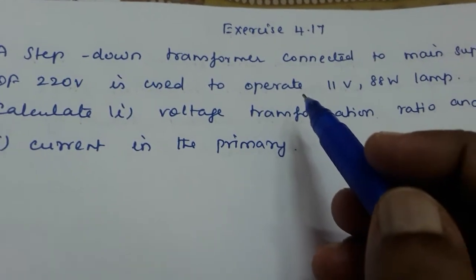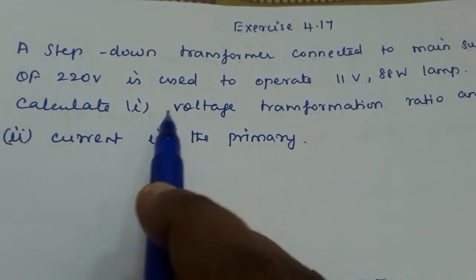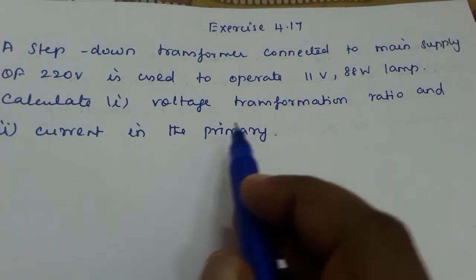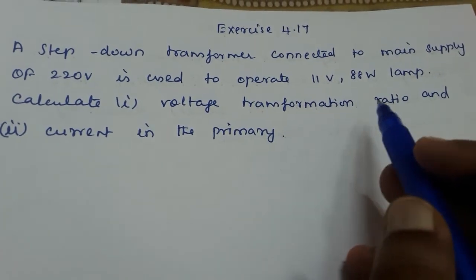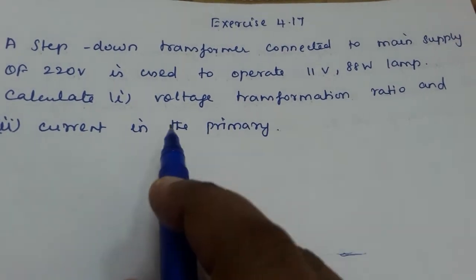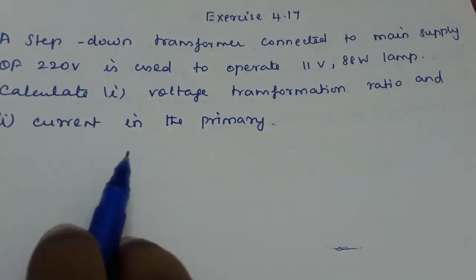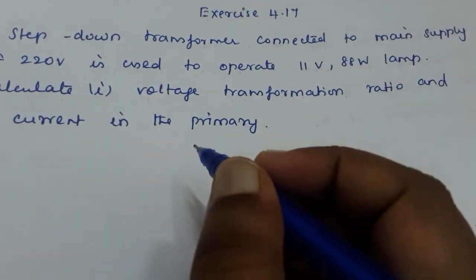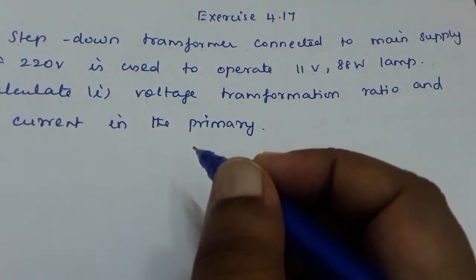Exercise 4.17: A step-down transformer connected to main supply of 220 volt is used to operate an 11 volt, 88 watt lamp. Calculate the voltage transformation ratio and current in the primary.